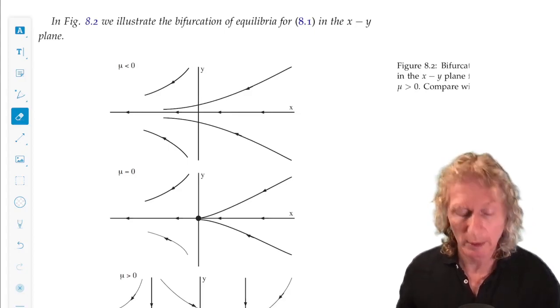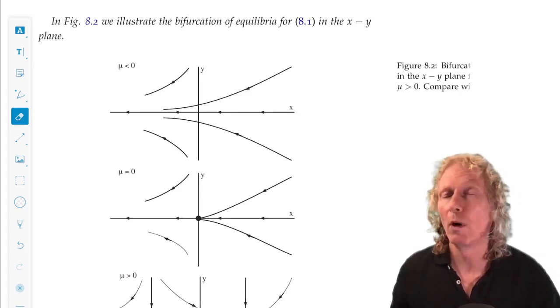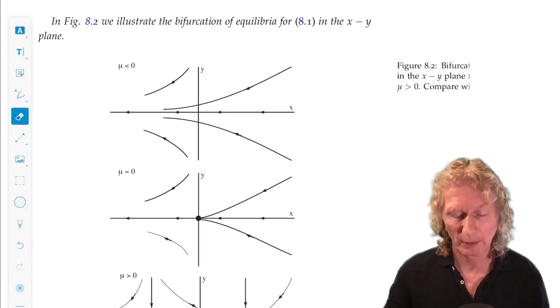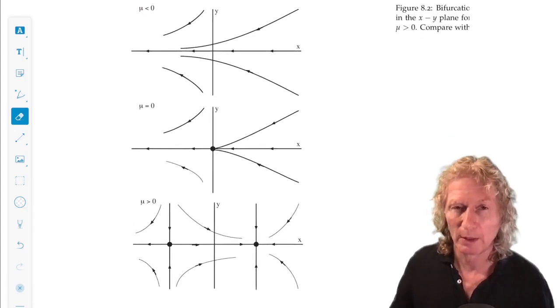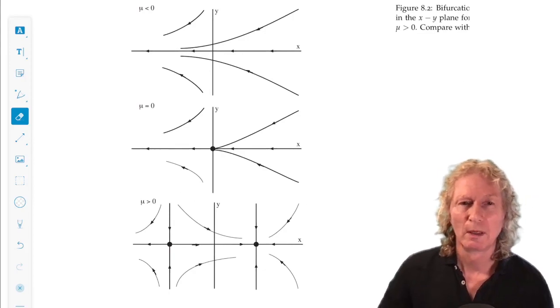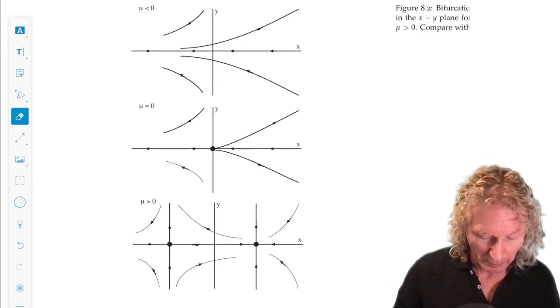two equilibria; and mu equals zero, one equilibria. It's a good exercise to check this and make sure the arrows are denoting the correct sense of evolution.